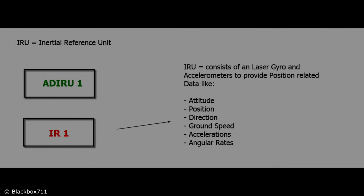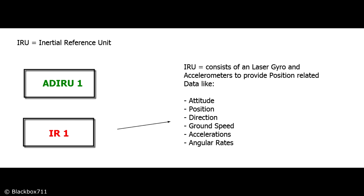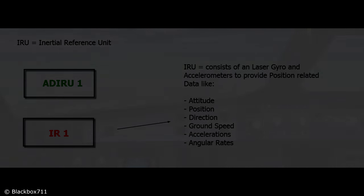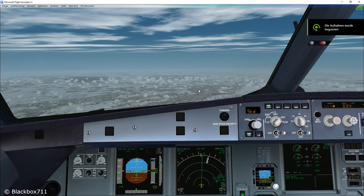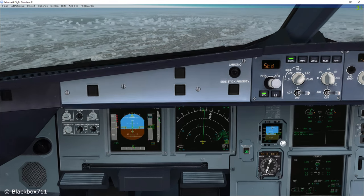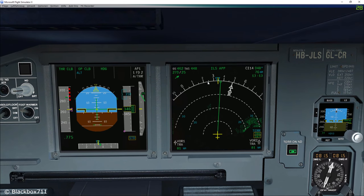Now let's look at the IR part of the ADIRS system. The inertial reference unit consists of a laser gyro and accelerometers to provide position-related data like attitude, position of the aircraft, direction, ground speed, accelerations and angular rates. All of this information is shown on the navigation display and on the primary flight display — for example, the position of the aircraft, the heading, the ground speed and the attitude.